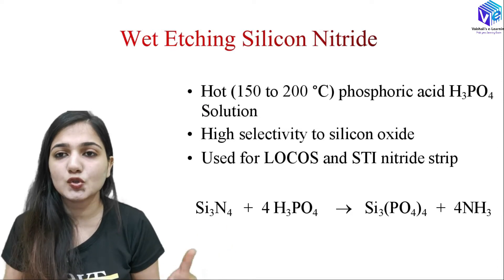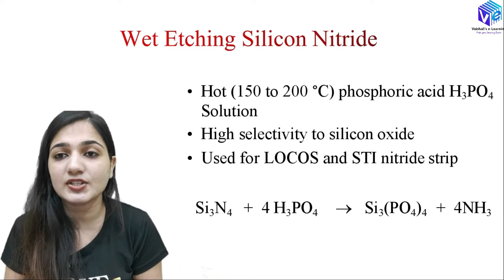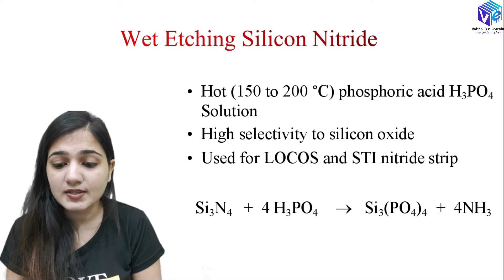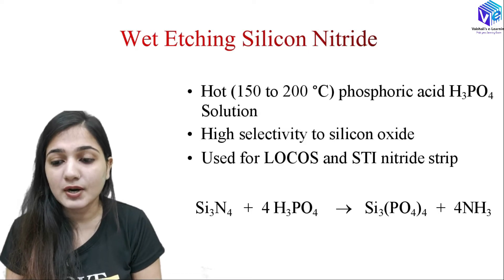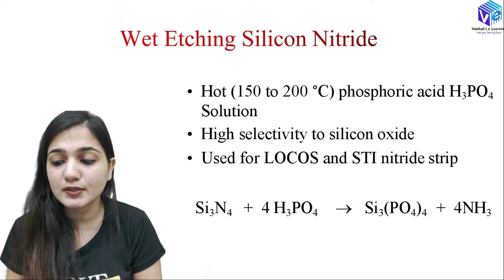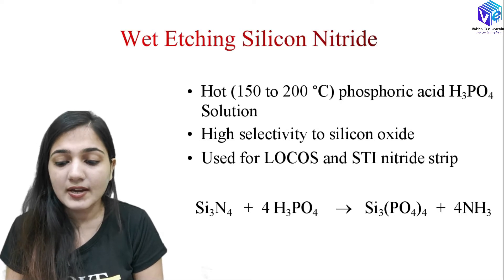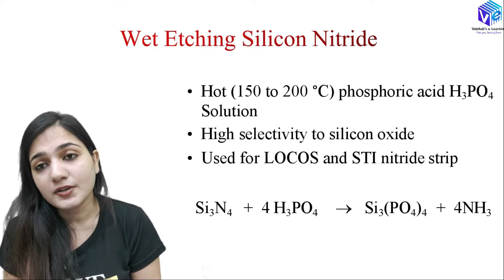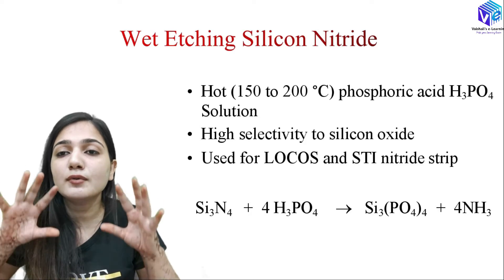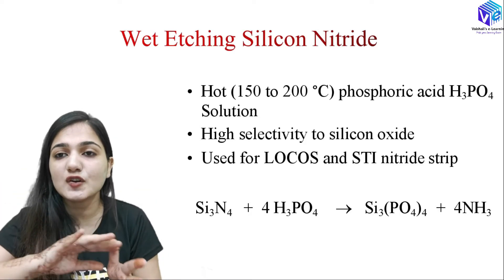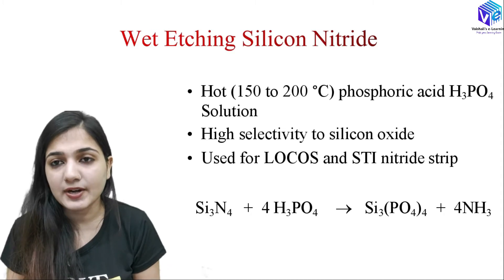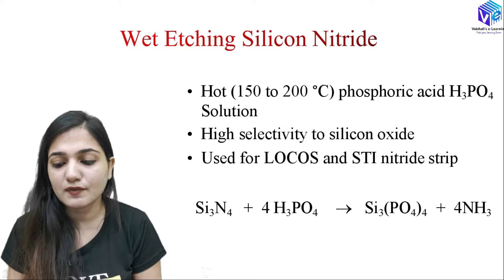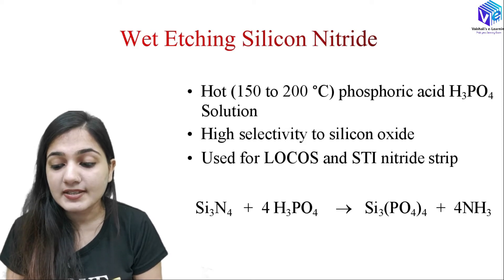Again I am using wet etching, which is also called chemical etching — here I am using some chemicals to etch out the silicon nitride layer. I am using high temperature; it is a hot process where the temperature is around 150 to 200 degrees Celsius, and I am using phosphoric acid to dissolve the silicon nitride. It is highly selective towards silicon dioxide, so it will not remove the silicon dioxide layer — it will just remove the silicon nitride layer. This is a very good advantage of wet chemical etching of silicon nitride. It is used for the local oxidation of silicon and also for the STI nitride strip.